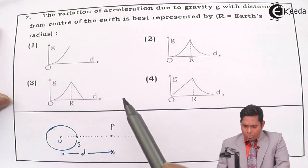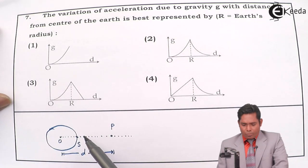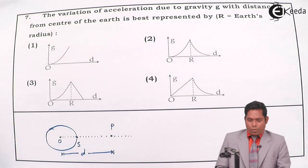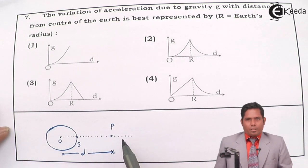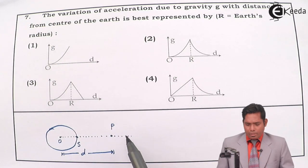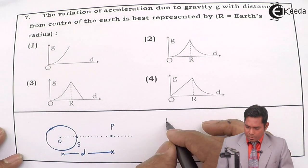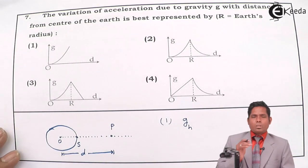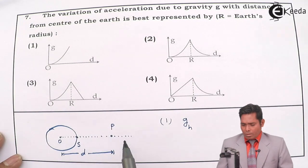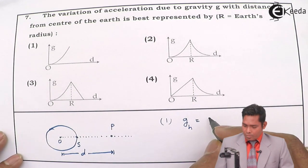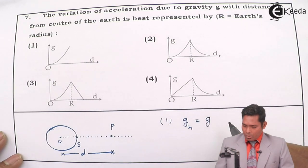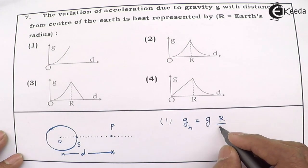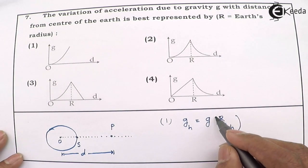Now we have two formulas for the acceleration due to gravity at a certain altitude and at a certain depth. One formula is that acceleration due to gravity at a height h above the surface of the earth is given by g_h = g × (R / (R + h))².